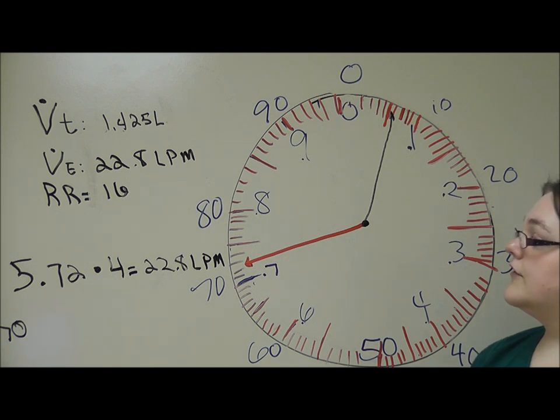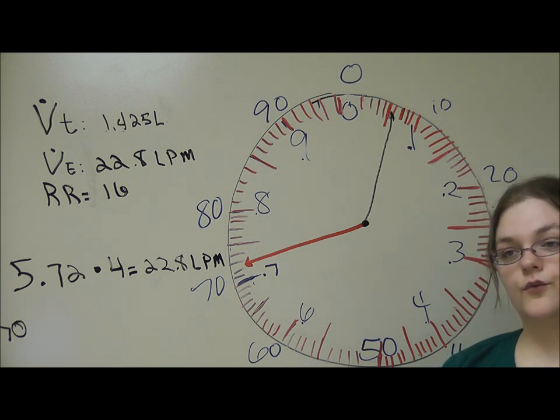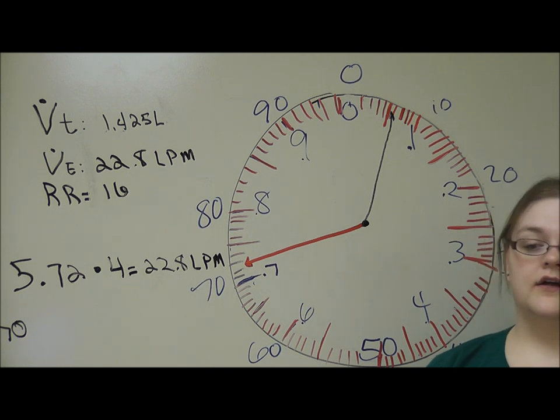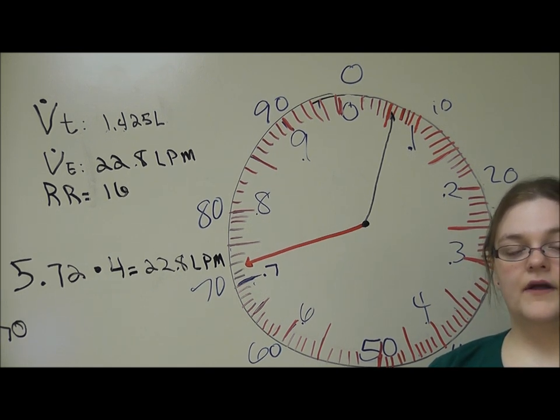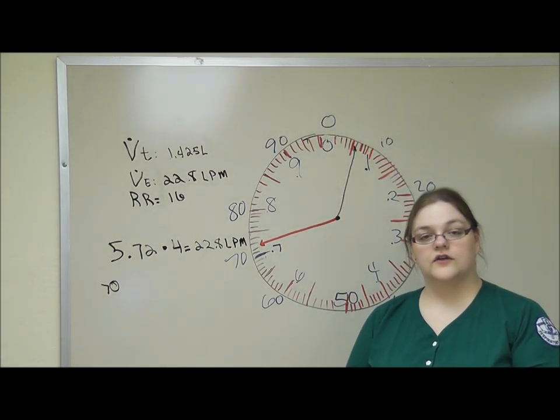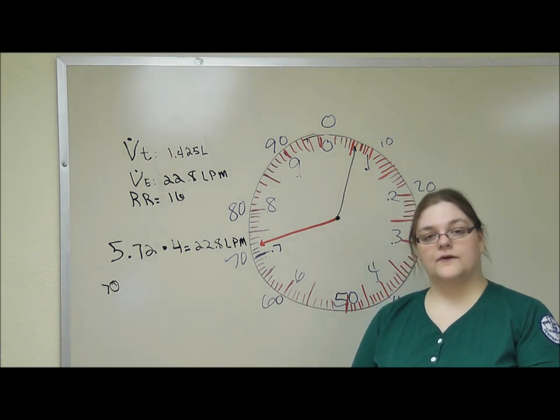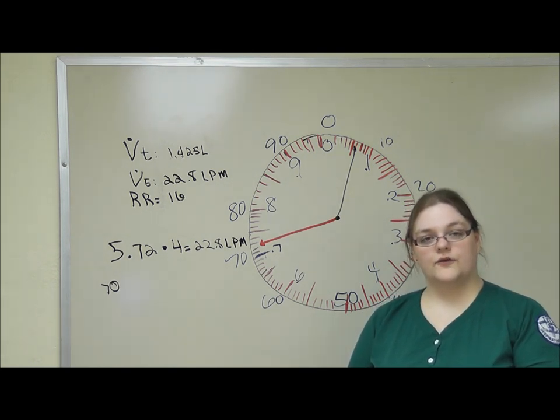The minute ventilation, the tidal volume, and the respiratory rate can be used to calculate a patient's minimum flow needs for use with a large volume nebulizer. These numbers can also be used to estimate a patient's appropriateness for different aerosol devices, whether they're appropriate to use a dry powder inhaler, a metered dose inhaler, or a handheld nebulizer.